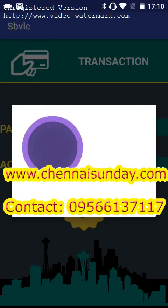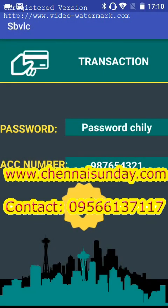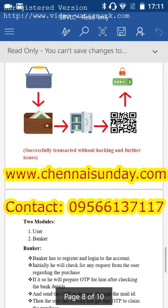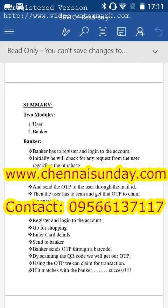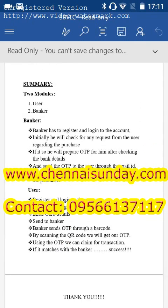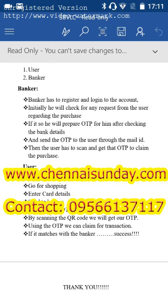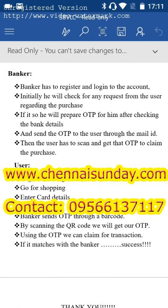Now for your clear understanding, I'll explain once again. The summary of our project involves two modules: User and Banker. What the Banker does: the banker registers and logs in, checks for any purchase request from the user, prepares an OTP after checking the bank details, and sends the OTP to the user through their mail ID. The user then scans and gets that OTP to claim the purchase.